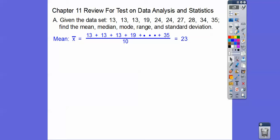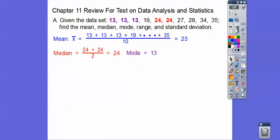The median: you get the number in the middle. Since there are two numbers in the middle, you average those two — add them up and divide by two. Those two happen to be the same, so the median is 24. The mode is 13 — that's the number that appears most, highlighted in purple. And the range is the big number minus the small number: 35 minus 13 is 22.